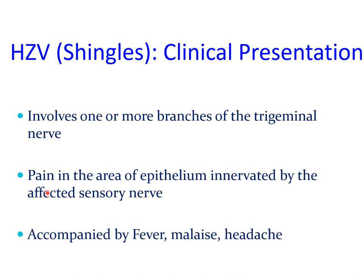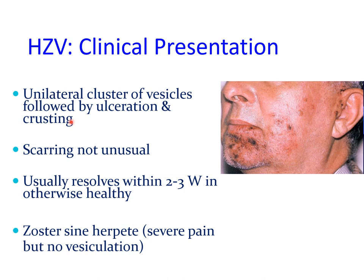Shingles is characterized by pain in the area of the epithelium innervated by the affected sensory nerve, accompanied by fever, malaise, and headache. Shingles involving the face is characterized by a unilateral cluster of vesicles on the facial skin, followed by ulceration and crusting. When the mandibular branch of the trigeminal nerve is involved, the lesions are unilateral and may extend to the ear. Scarring is not unusual, but usually lesions settle within two to three weeks in otherwise healthy individuals.